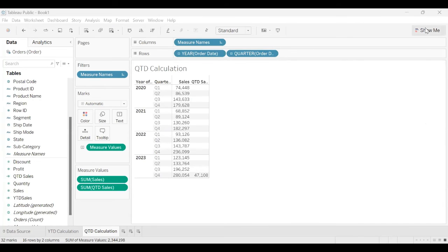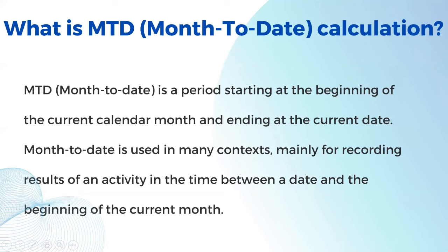The next calculation is MTD — Month to Date. Month to Date is a period starting at the beginning of the current calendar month and ending at the current date. It is used in many contexts mainly for recording the result of an activity between a date and the beginning of the current month. The MTD calculation is similar to QTD — the only difference is that instead of 'quarter' we use 'month.'